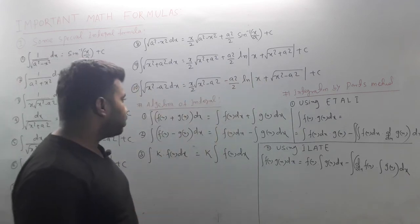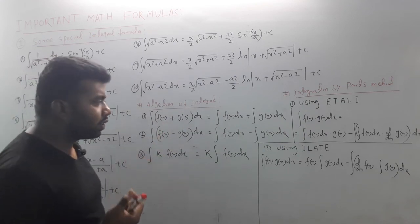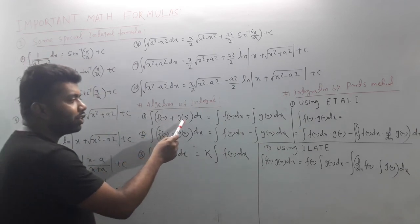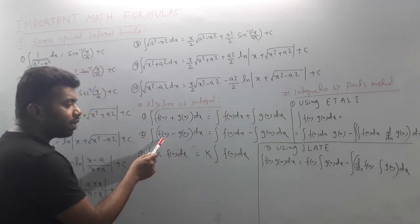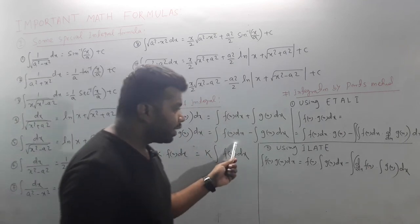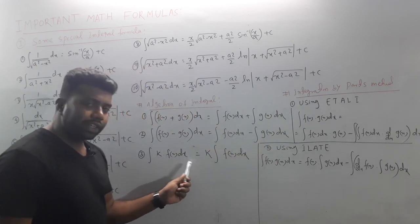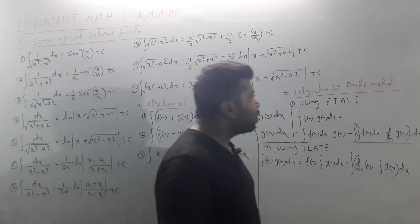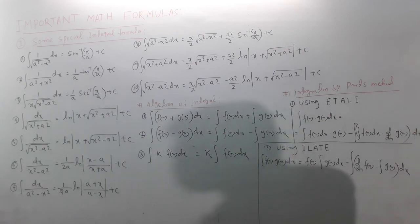This is the algebra of integration. When you have different functions, you can solve them individually. The integration of [f(x) + g(x)] = integration of f(x) plus integration of g(x). Integration of [f(x) - g(x)] = integration of f(x) minus integration of g(x). For k·f(x)·dx, k is constant and goes outside the integral. Next, integration by the by-parts method.